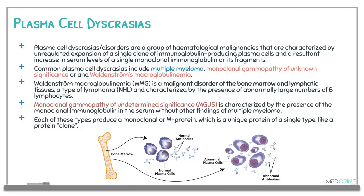The common plasma cell dyscrasias are multiple myeloma, monoclonal gammopathy of undetermined significance, and Waldenström's macroglobulinemia. Waldenström's macroglobulinemia is a malignant disorder of the bone marrow and lymphatic tissues, a type of non-Hodgkin lymphoma characterized by abnormally large numbers of B lymphocytes. Monoclonal gammopathy of undetermined significance is characterized by monoclonal immunoglobulins in the serum without other findings of multiple myeloma. Each of these types produces a monoclonal or M protein — a unique protein of a single clone type.